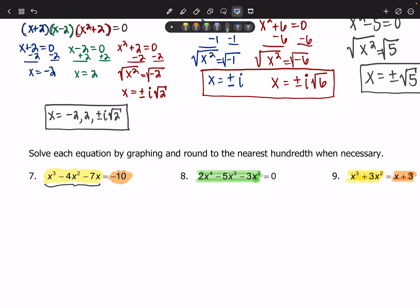For number seven, we're going to set the left-hand side of the equation equal to y1 and the right-hand side equal to y2. So y1 will equal x cubed minus 4x squared minus 7x, and y2 will equal negative 10.